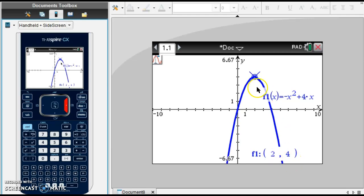2, 4 is the point that is the maximum piece of this parabola. So my vertex is the point 2, 4.